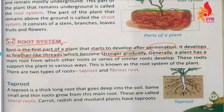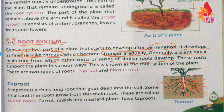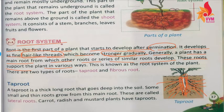Generally a plant has a main root from which other roots branch out in a similar structure. The main root is at the center, and smaller roots are formed from it. These roots support the plant in various ways. This is known as the root system of the plant.